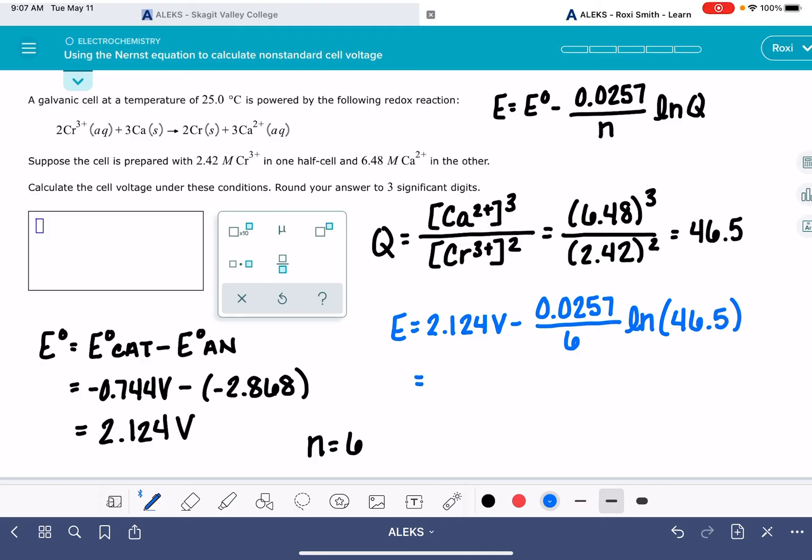You just got to be a little bit careful about getting these entered into your calculator. I'm going to do the natural log of 46.5 first, multiply that by 0.0257 divided by 6, and then I'm going to take 2.124 and subtract all of this. And the answer that I get to three significant figures is 2.11 volts.